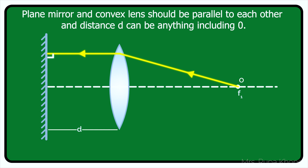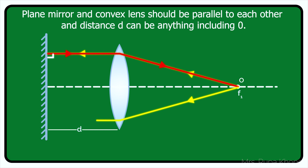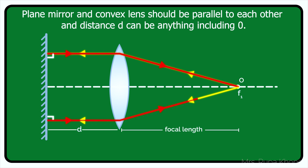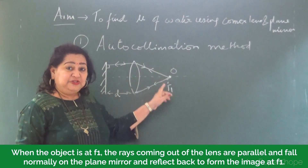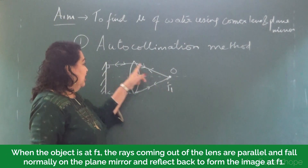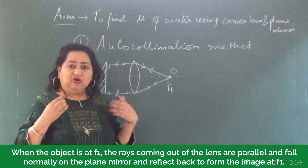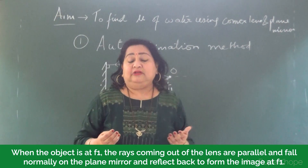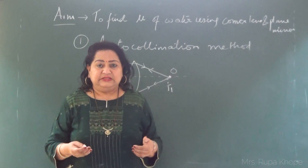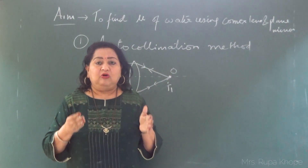The ray falls normally on the plane mirror and is reflected back in the same direction. On this side also, the ray comes back to its original position. So when the object is at focus, we get parallel rays coming out of the convex lens. This method of finding the focal length of the convex lens is called the auto-collimation method.